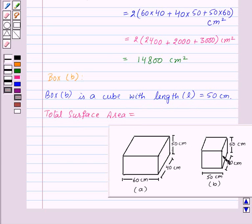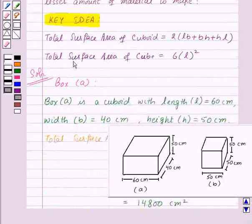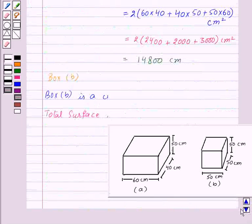So total surface area of box B will be, now we know that the total surface area of a cube is equal to 6l². So let's write it here: 6l².